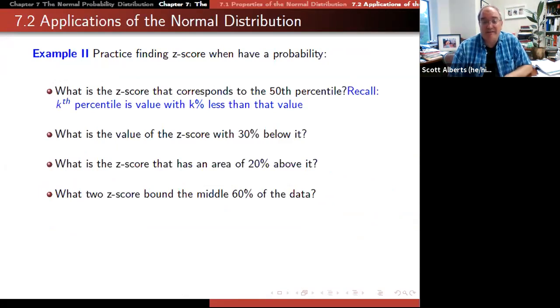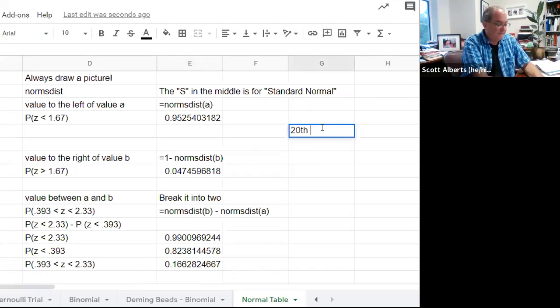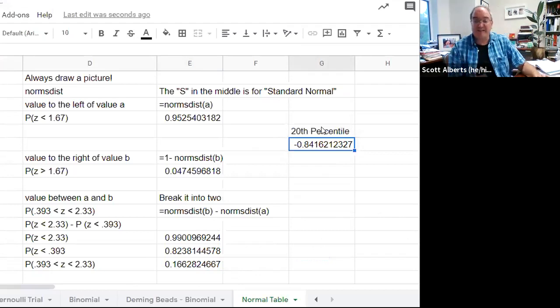We could also go backwards and say, what z-score would we need to get 20%? That's the same as finding the 20th percentile. The command for that is norms.inv. Then we just put in our value 0.2. If we do that, the number is less than zero, or it's negative because we know zero is right at the mean. That's the 50th percentile. It turns out it's about 85%.